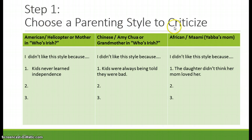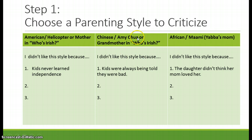The first step is to choose a parenting style to criticize. We have three different types to work with. Which one didn't you like? Then do some quick brainstorming — 'I didn't like this style because...' In American helicopter parenting, kids never learned independence. In the Chinese style, kids were always being told they were bad. And in the African style, the daughter didn't think her mom loved her. Pick one of these and think of three reasons why you didn't like it — that's the person you're going to convince to change.